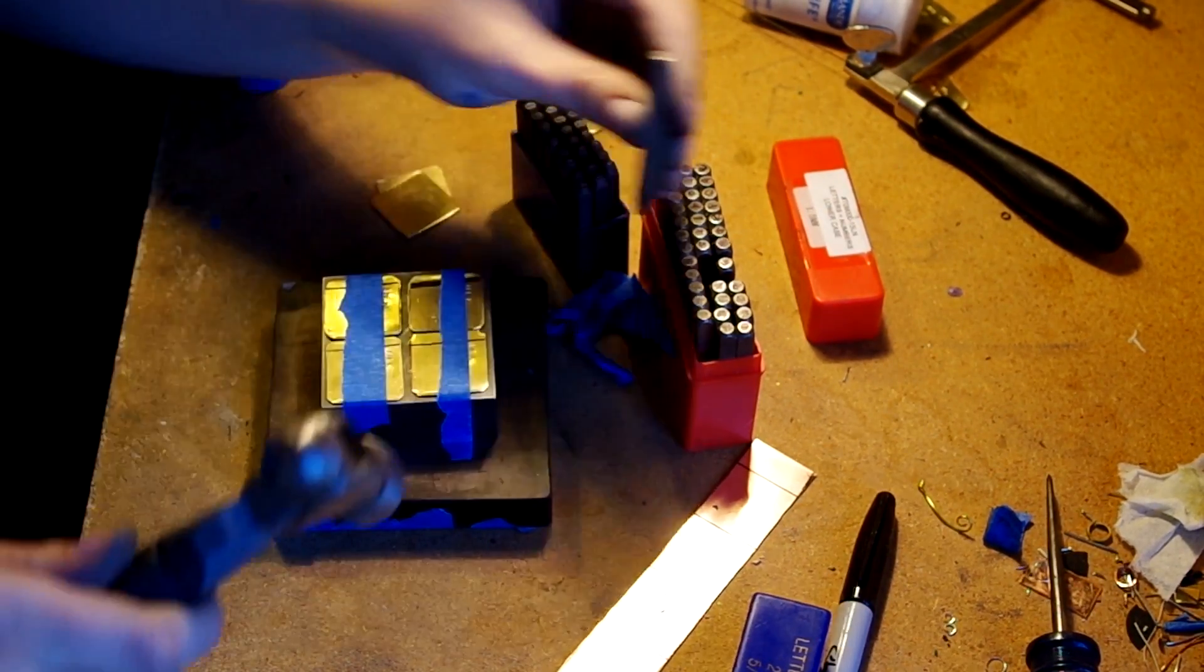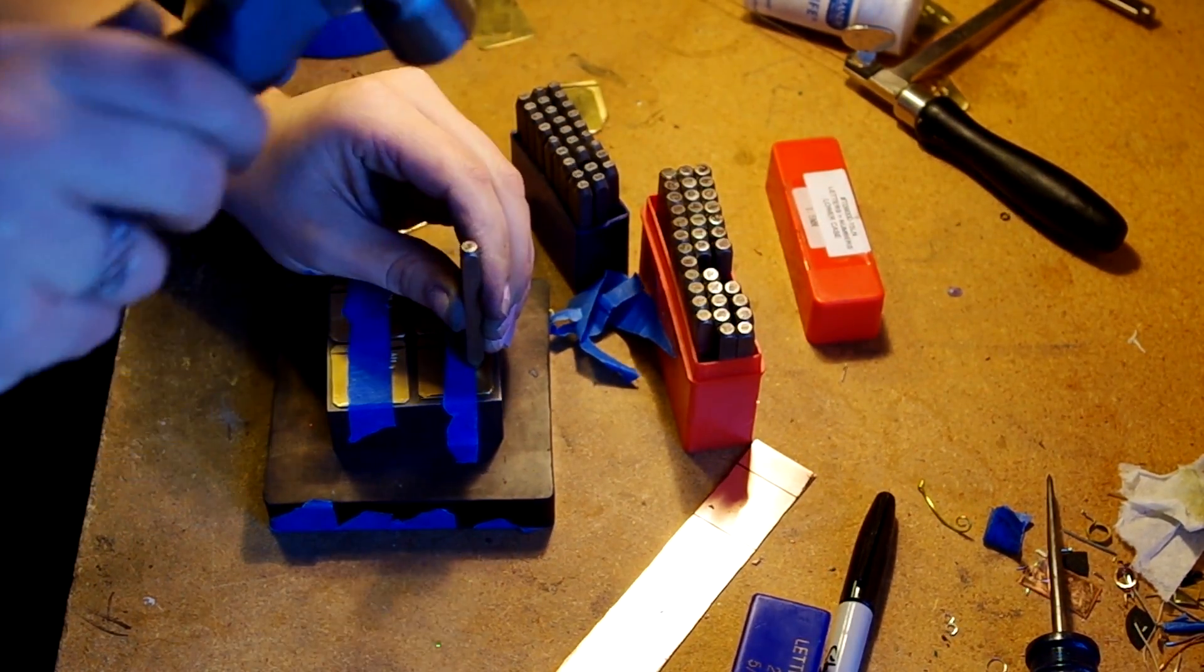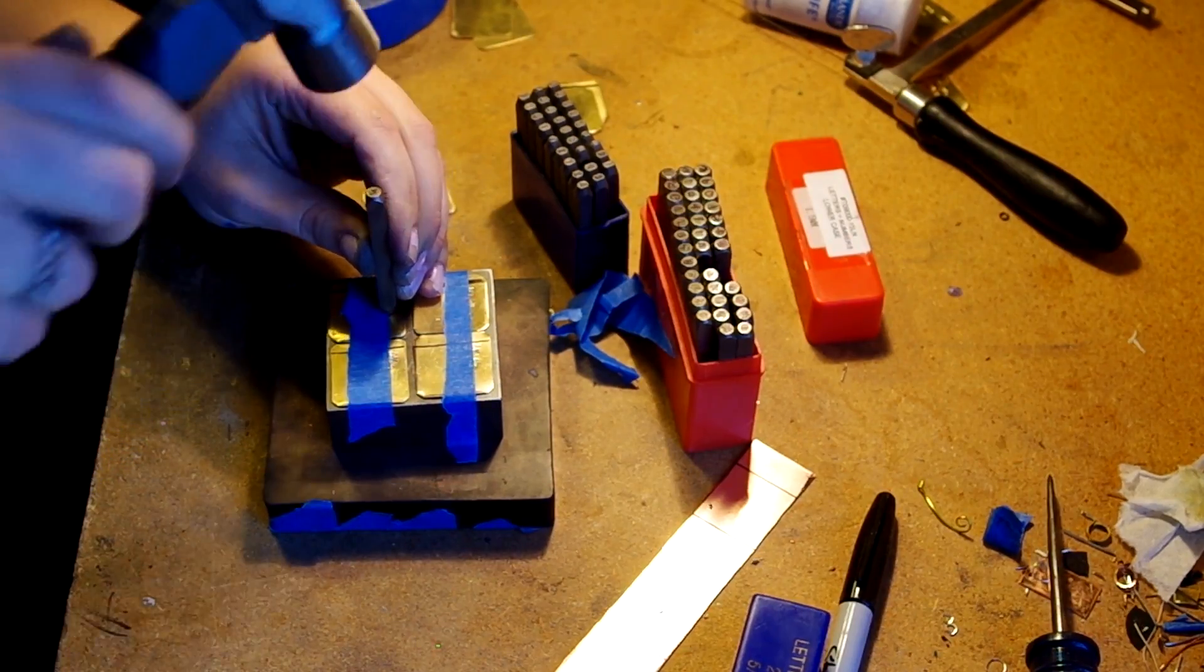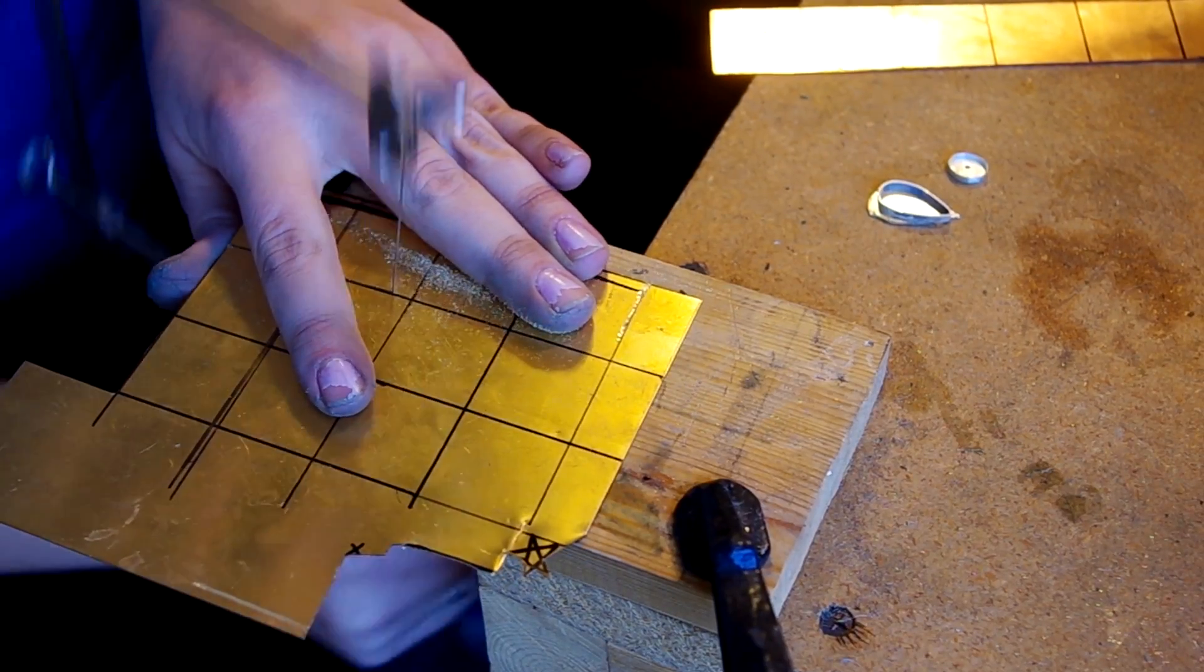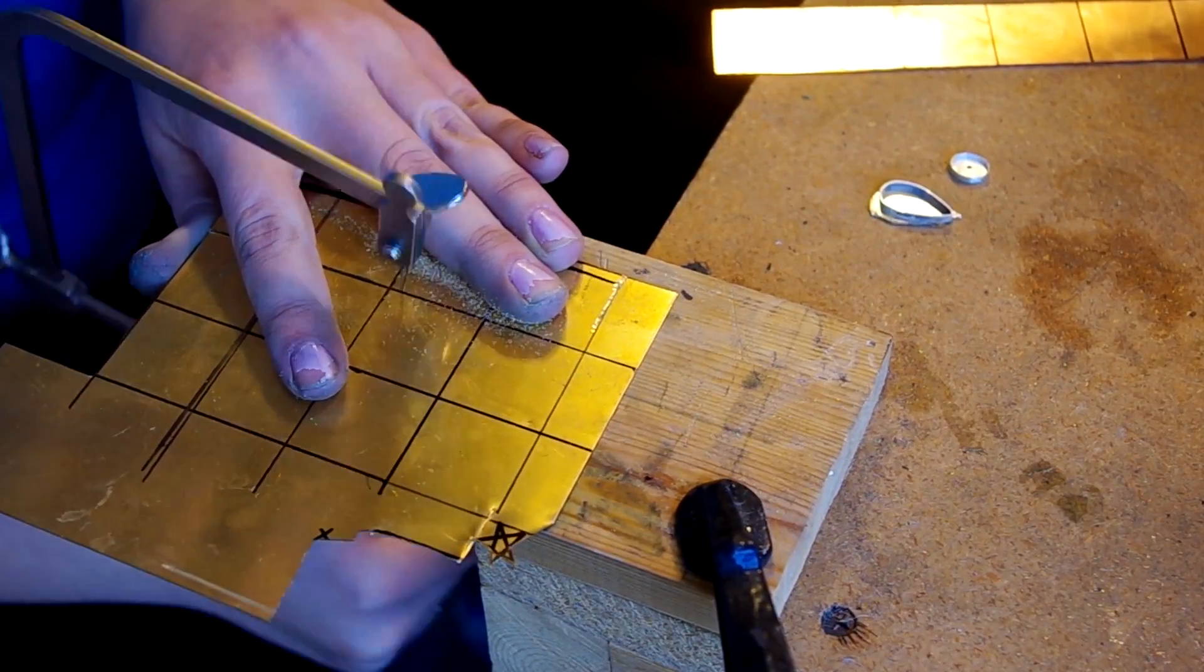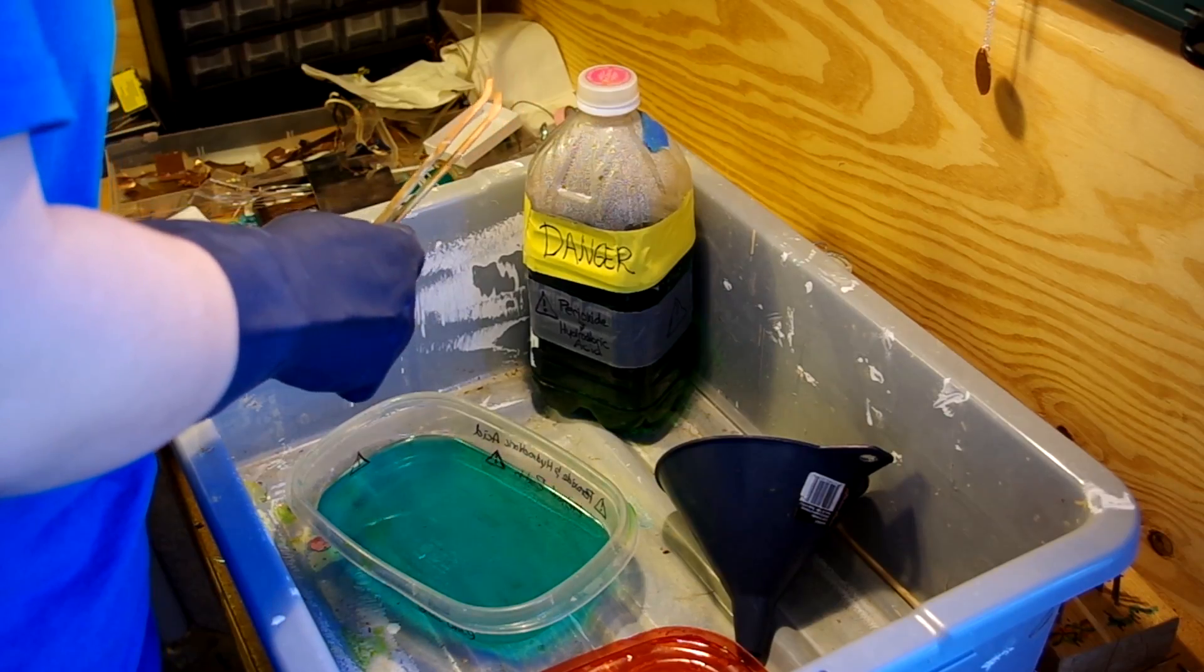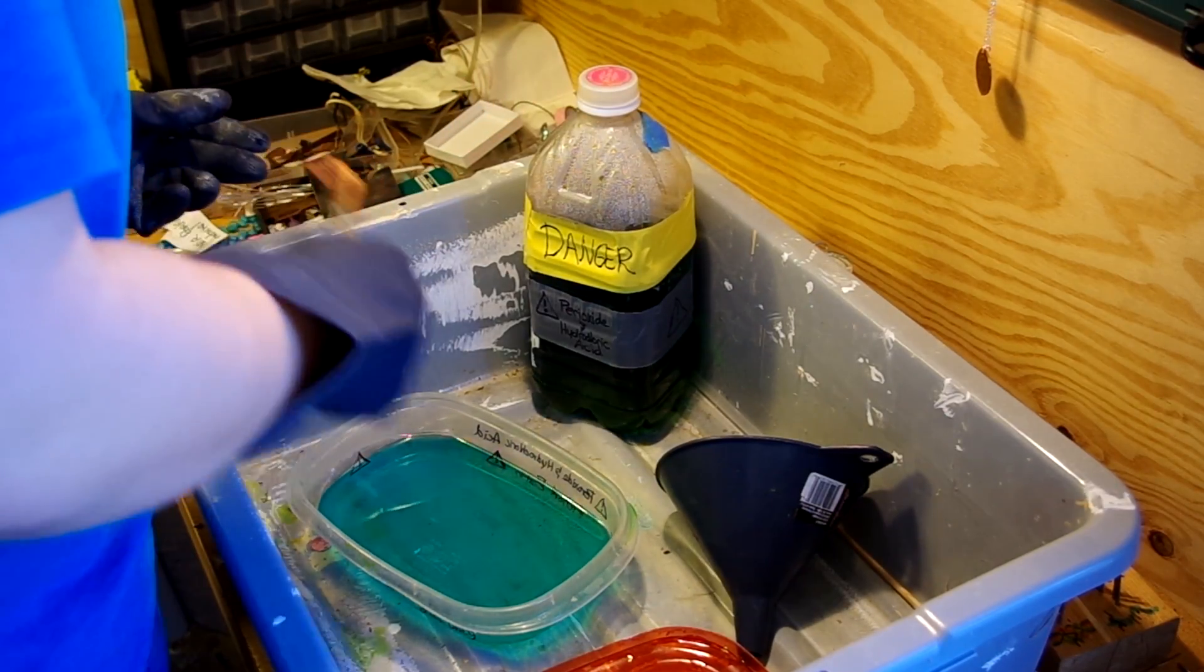So I'm stamping individual letters for a bunch of book necklaces that I've been making. I'm actually recording this audio a couple months after I started putting together this video. I had lost the files on a hard drive. Anyway, here I am sawing metal but I have a bandsaw for straight cuts now. I only use the handsaw for detailed things.